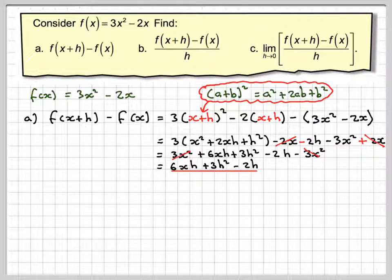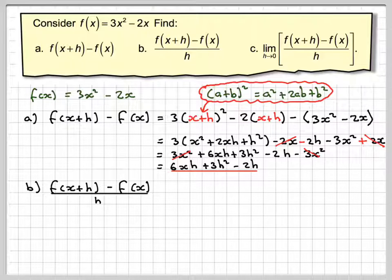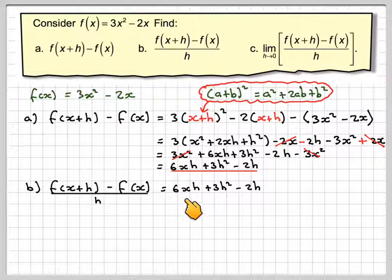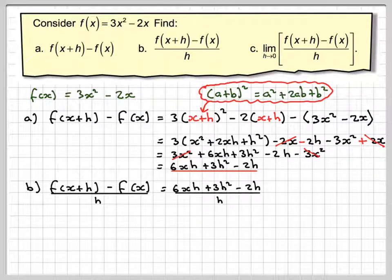You might want to factorize out the h as well. Part b: [f(x+h) - f(x)]/h. This is the answer from the previous part, 6xh + 3h² - 2h, all divided by h.